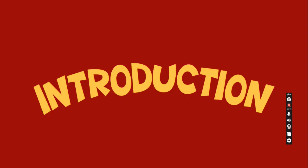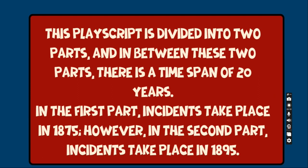Introduction. This play script is divided into two parts, and in between these two parts, there is a time span of 20 years. In the first part, incidents take place in 1875. However, in the second part, incidents take place in 1895.